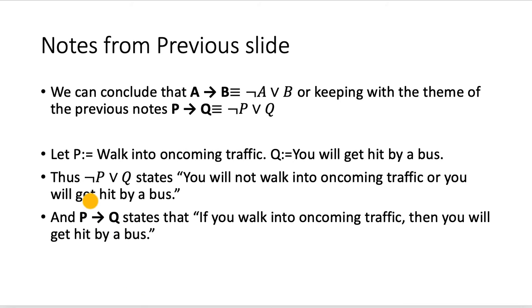Thus, not P or Q states you will not walk into oncoming traffic or you will get hit by a bus. And P implies Q states that if you walk into oncoming traffic, then you will get hit by a bus.